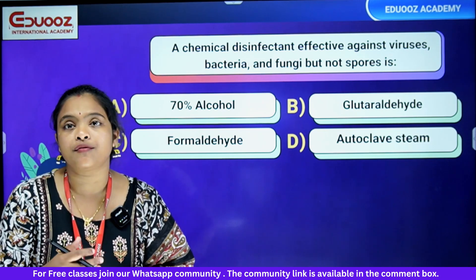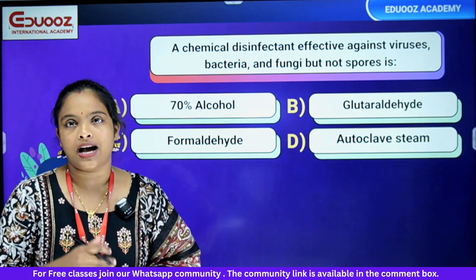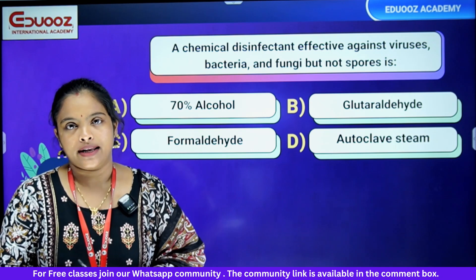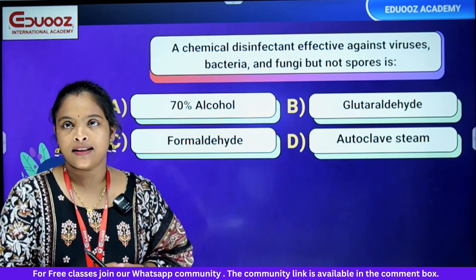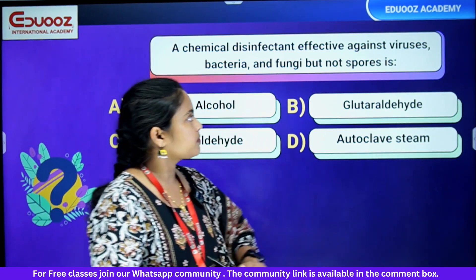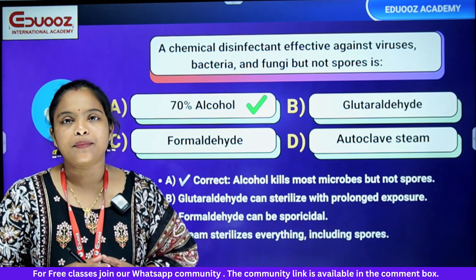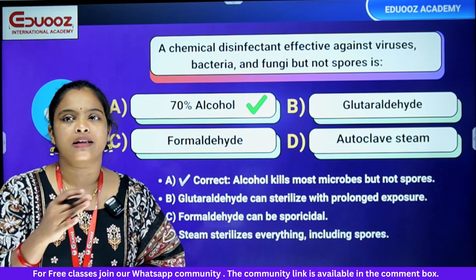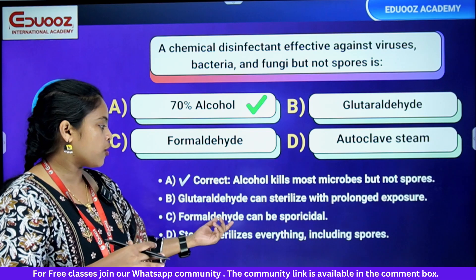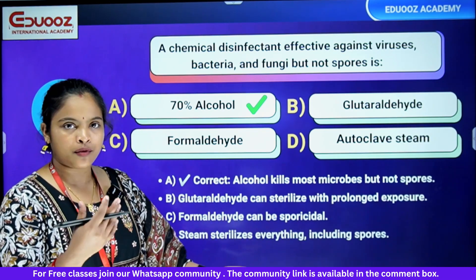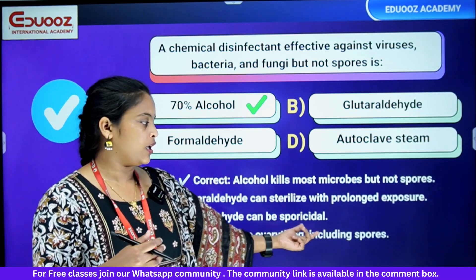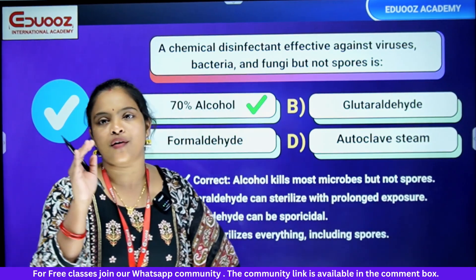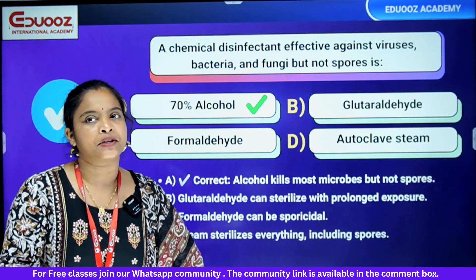Which chemical disinfectant is effective against viruses, bacteria, and fungi but not spores? Options: 70% alcohol, glutaraldehyde, formaldehyde, autoclave steam. 70% alcohol kills microbes but is not effective against spores. Glutaraldehyde requires prolonged exposure for sterilization. Formaldehyde is sporicidal and used for fumigation. Steam sterilizes everything including spores. The answer is 70% alcohol — effective broadly but not against spores.